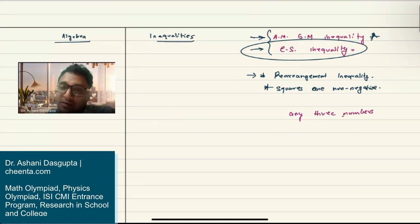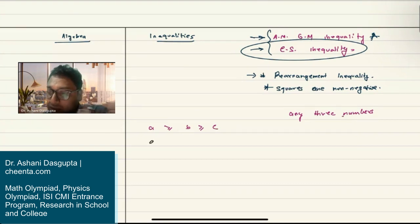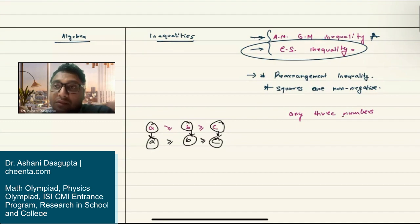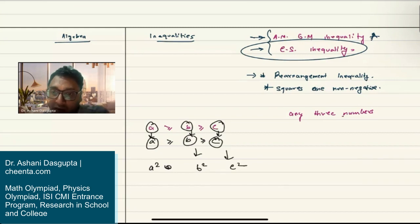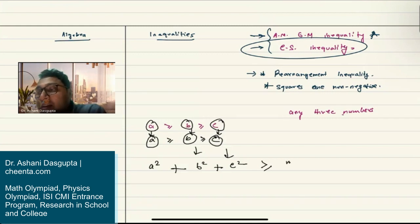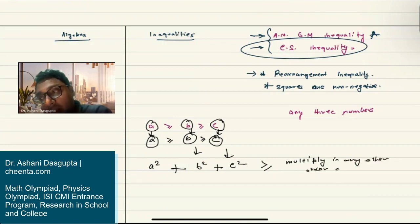I'll tell you what it means. We have a greater than or equal to b greater than or equal to c. If you multiply them in the same order, you get a², b², and c². If you multiply them in the same order and add them up, it will be larger than if you multiply in any other order and add them up.